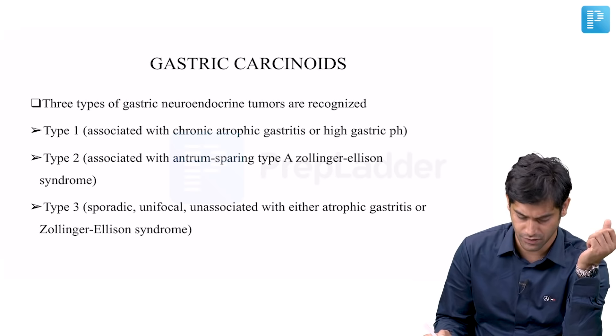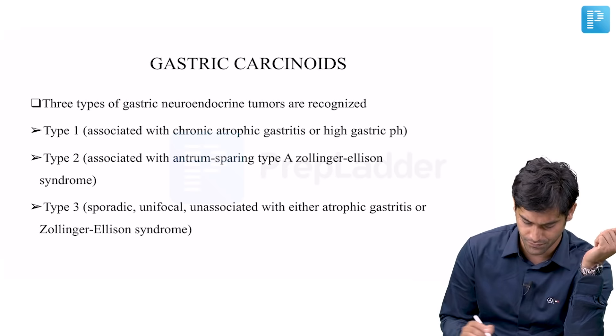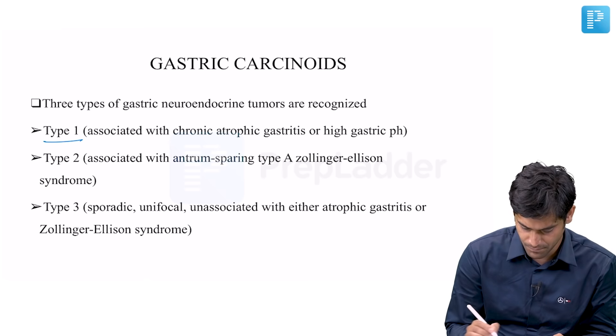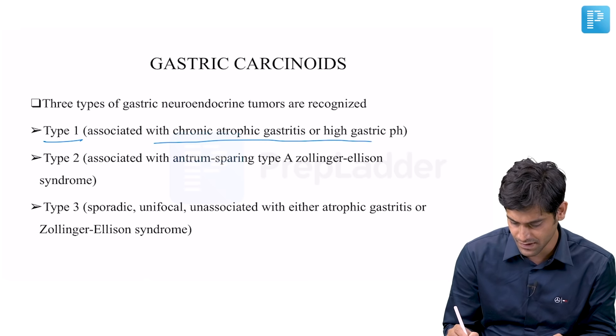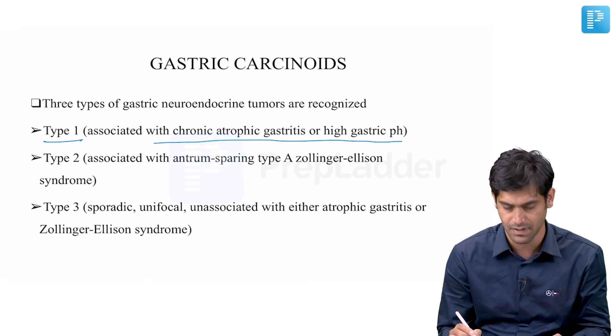Let us talk about gastric carcinoids. There are predominantly three types of gastric carcinoids. Neuroendocrine tumors: Type 1 is associated with chronic atrophic gastritis and high gastric pain. These patients tend to have chronic atrophic gastritis and hypergastrinemia.